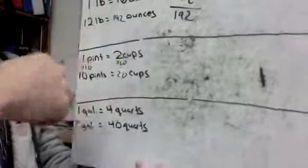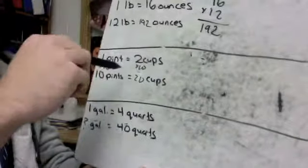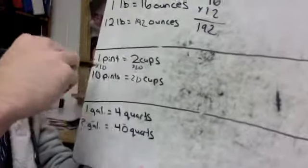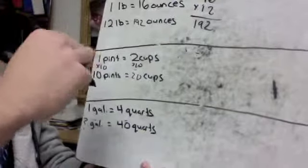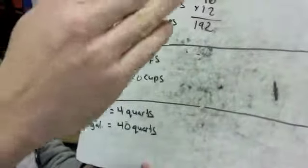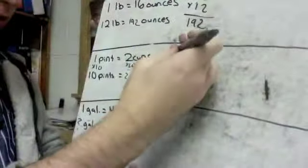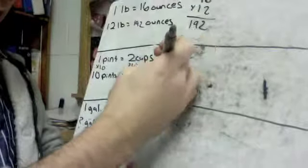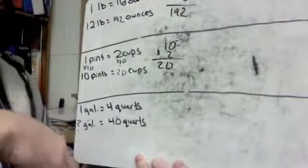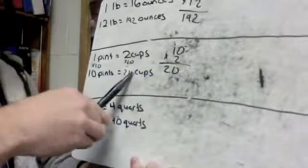Now to do this more of how we did it up here, basically we're saying that for every one pint, we have two cups. We have 10 pints. So for every pint, we have two. So that means we're going to have 10 twos, which would just be 10 times two, which would be 20. So we got our 20 cups.